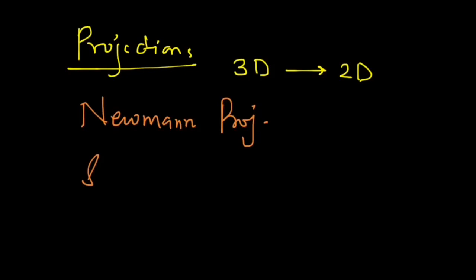Then we have the Sawhorse projection. We also have the Fischer projection. This is mostly used for biomolecules, so we will not be seeing it for a long time. The first one of these is the Newman projection, which we will see how to draw in the next video.